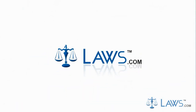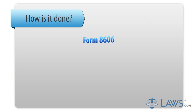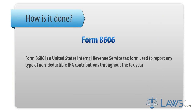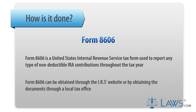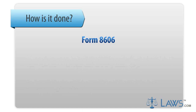Laws.com Legal Forms Guide. Form 8606 is a United States Internal Revenue Service tax form used to report any type of non-deductible IRA contributions throughout the tax year. Form 8606 can be obtained through the IRS's website or by obtaining the documents through a local tax office.